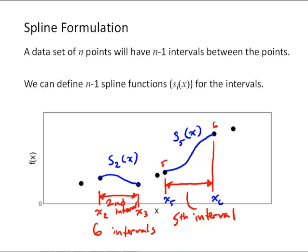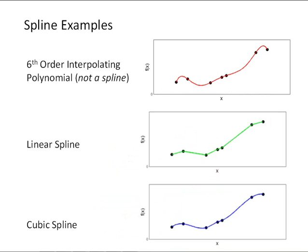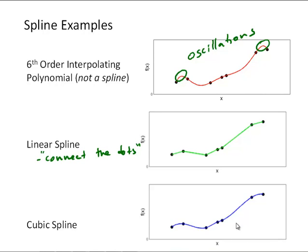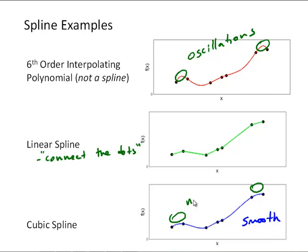Let's look at some example spline formulations. This first figure shows a sixth-order interpolating polynomial — not a spline — going through all seven points, and we can see some oscillations starting to develop near the endpoints. We can fit a linear spline through the same points, which is simply connect the dots: draw a straight line between each data point. A cubic spline looks smoother — about as smooth as the sixth-order polynomial — but with no oscillations.